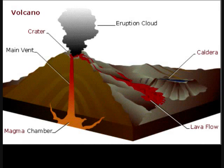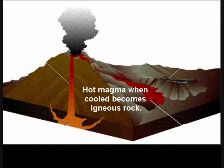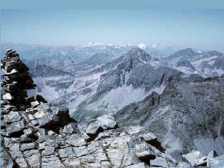Igneous rock is formed when liquid magma coming up out of the volcanoes cools into a solid. This rock creates new mountains.